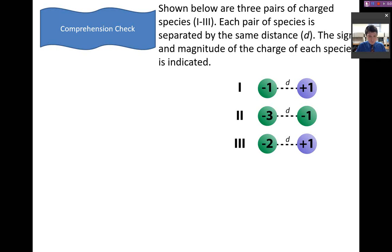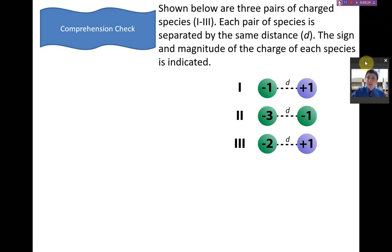Let's go through an example here. So, we have three pairs of charged species. We're going to label those pairs as 1, 2, and 3. And each pair is separated by the same distance. We're going to say D. The sign and magnitude of the charges are indicated. So, the sign tells us whether it's positive or negative. The magnitude gives us the actual value, 1, 2, or 3.